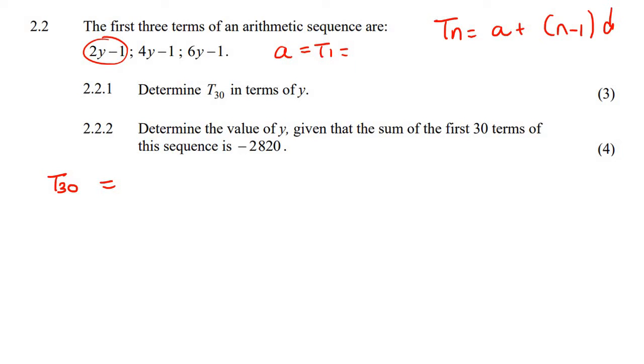2y minus 1. So we can say 2y minus 1 plus, now n, remember n is your position, the position, so in this case it's position 30.